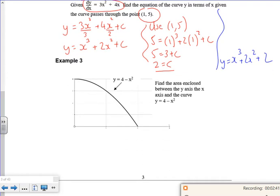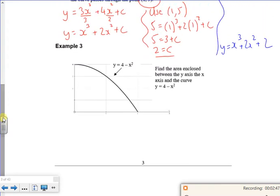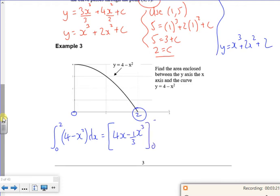Let's have a look at example 3. Example 3 asks you to find the area enclosed between the curve and the y and x axis. You can tell from your picture that that's a 2. So I'm going to integrate it between 0 and 2. What's my equation? 4 minus x squared. If you remember now with limits, it finds the area and I use square brackets.